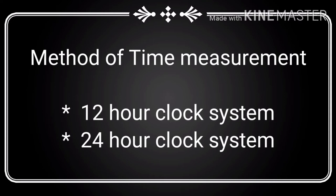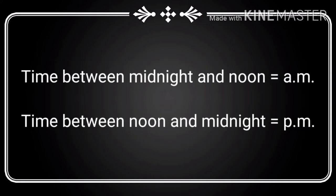In the 24-hour clock system, time is expressed as the number of hours and minutes that have passed since midnight.